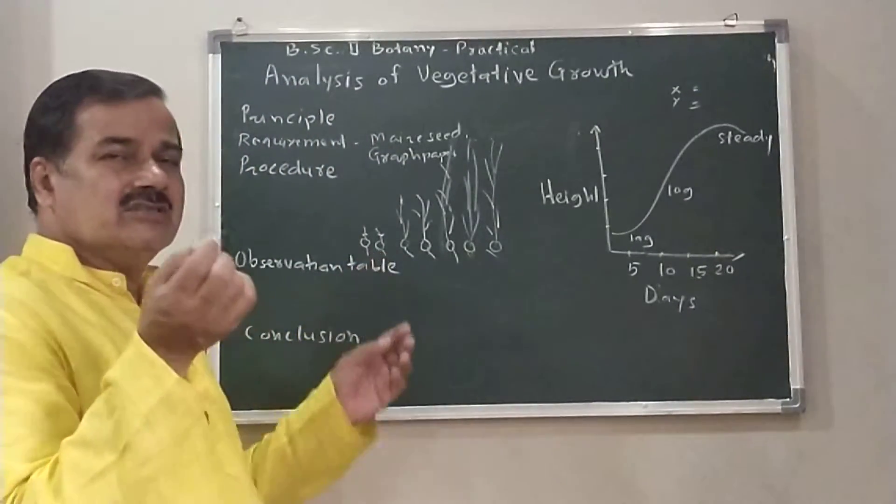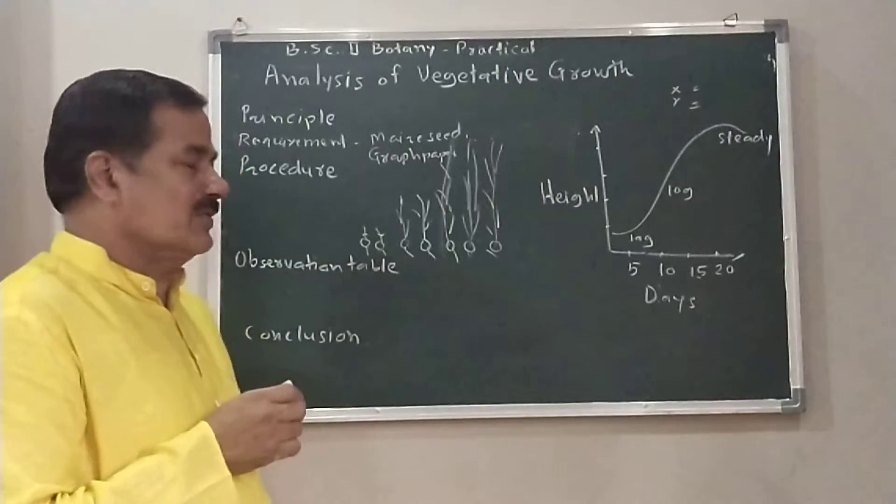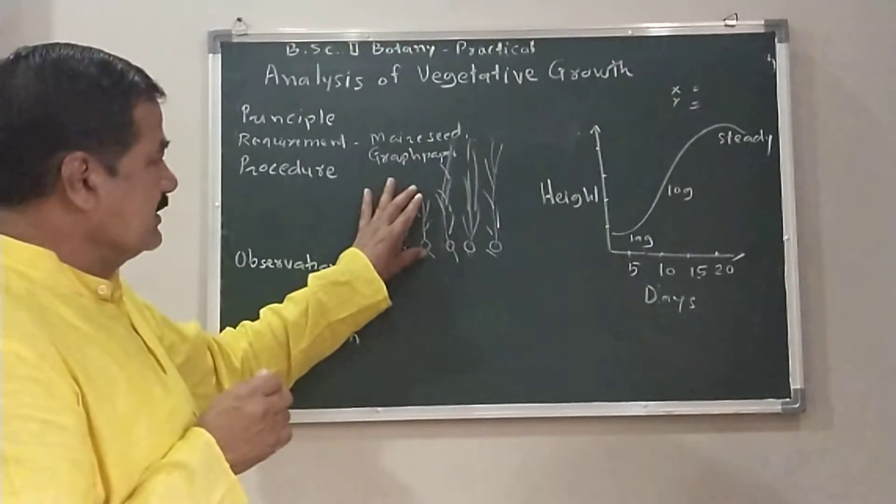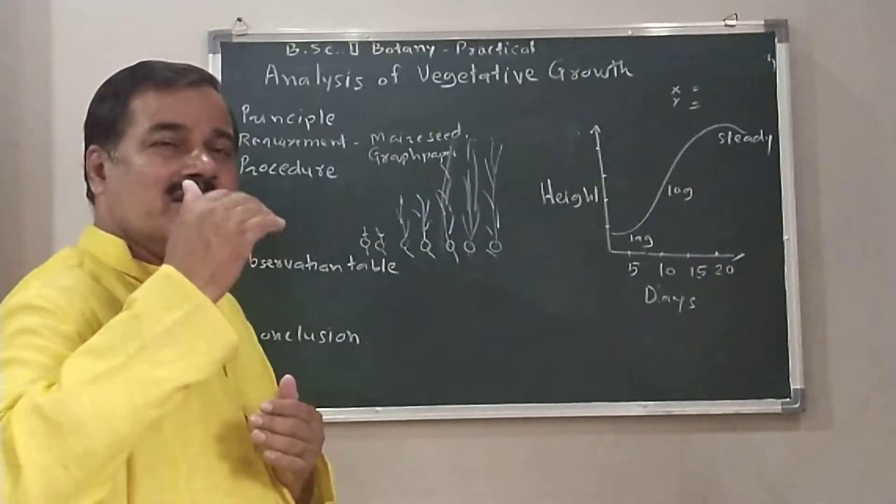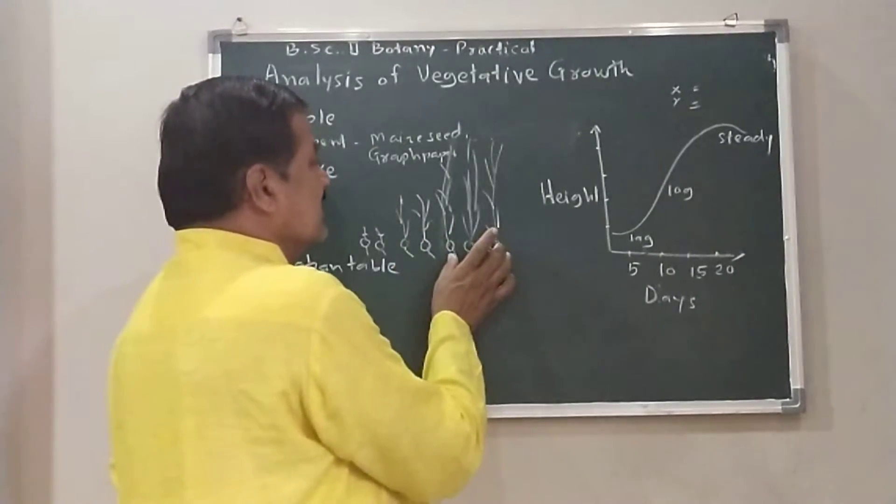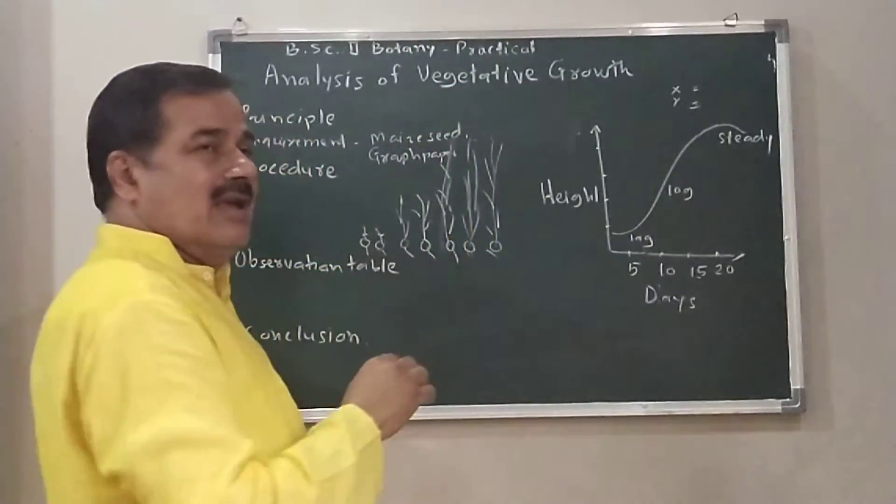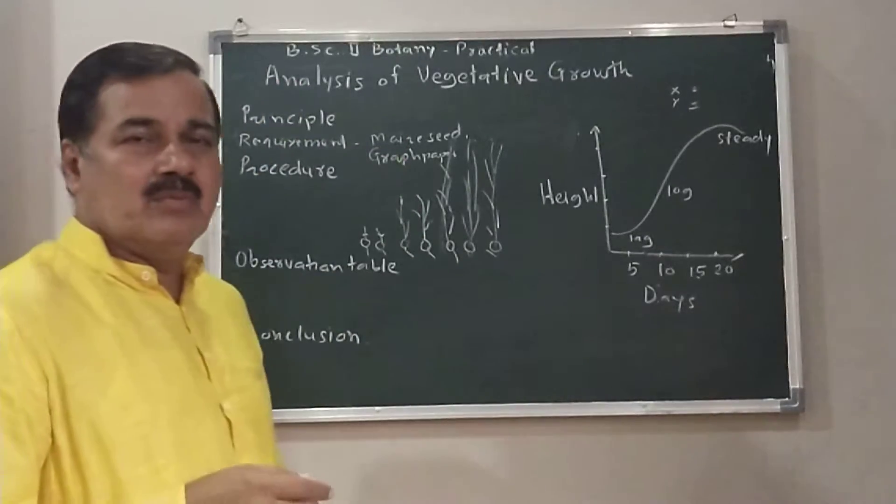Two seeds have very short, very lesser growth. Then two seeds have somewhat more growth. And two to three seeds have the most growth, that is the greater height.